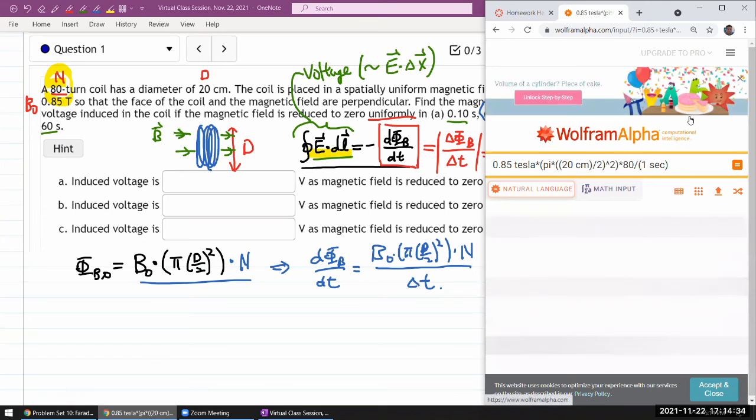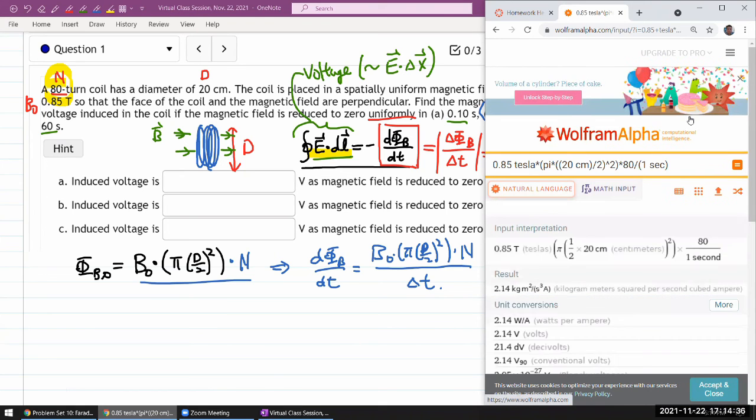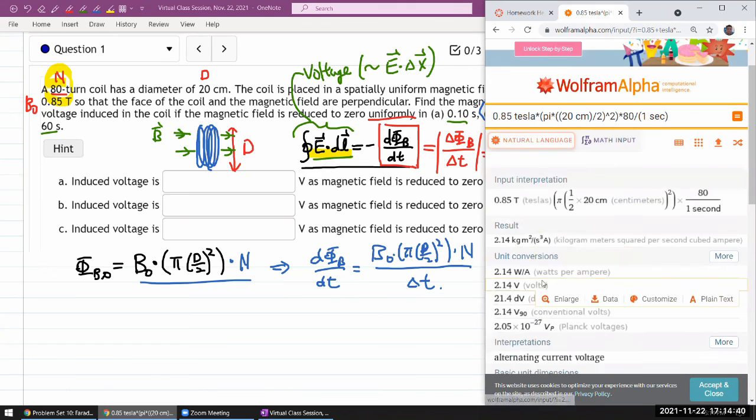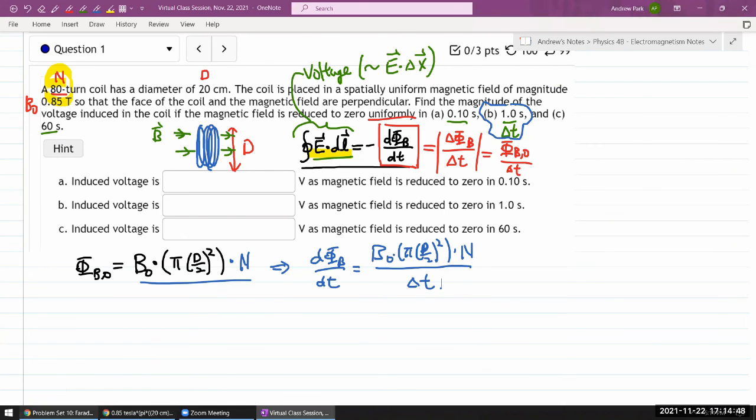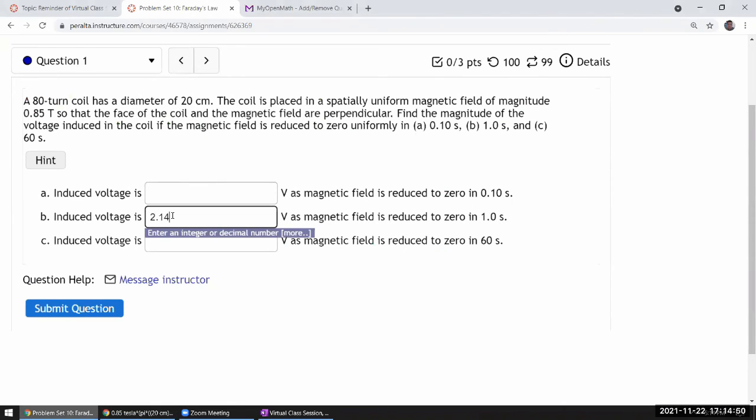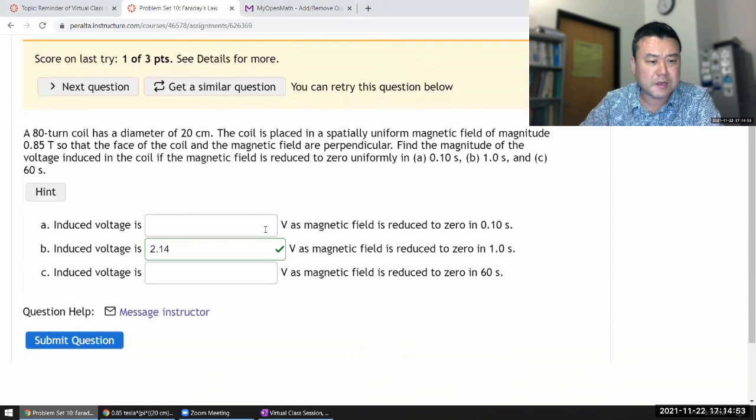It should give me one of the answer options in voltage. Yeah, one of the answer options is 2.14 volts. So, let me do b, a and c are basically the same with the different numbers. So, 2.14 volts should be right for b. Yeah, that's it. I don't know why it took people so long.